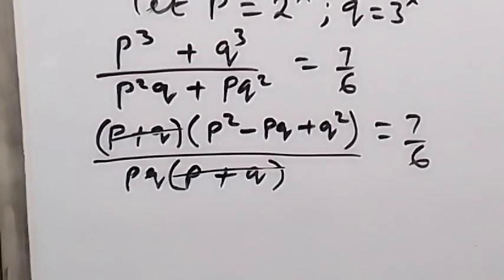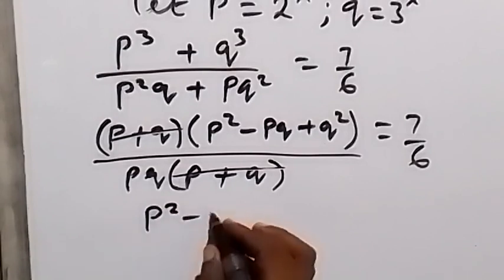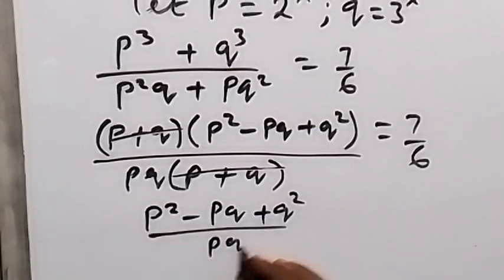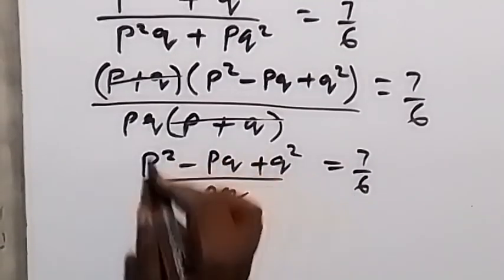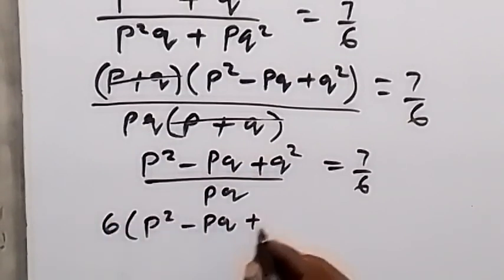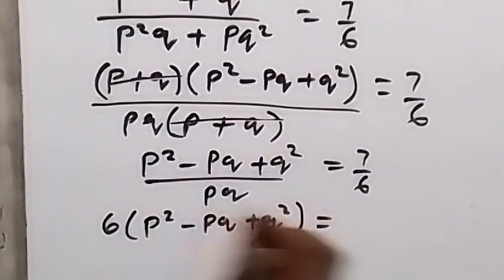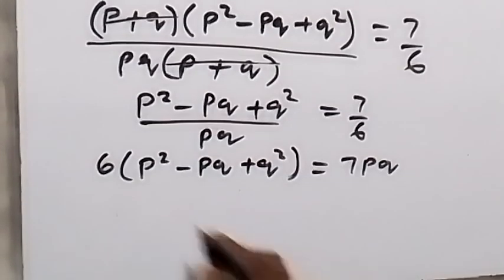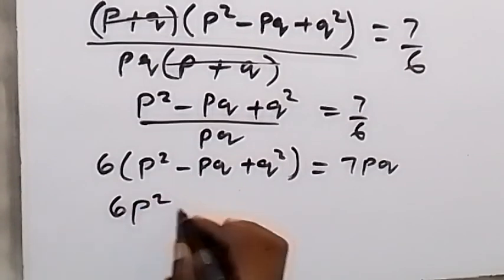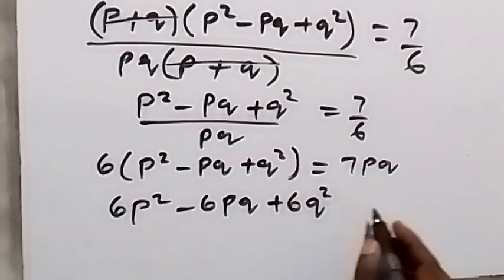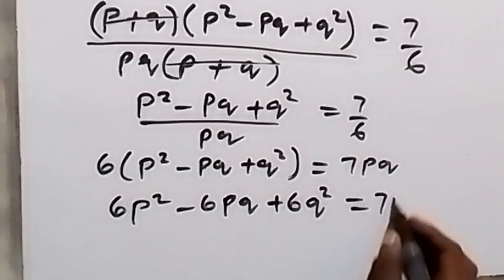Here, t plus q cancels out in numerator and denominator. What remains is t squared minus tq plus q squared, all over tq, equal to 7 over 6. When we cross multiply, we get 6 multiplied by t squared minus tq plus q squared, equals 7 times tq, that is 7tq.